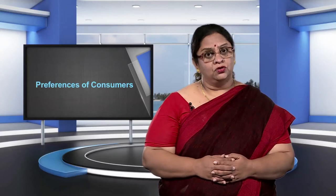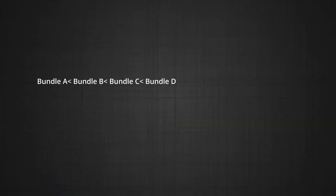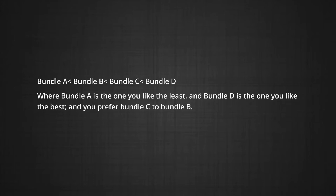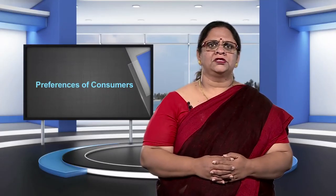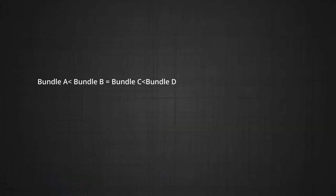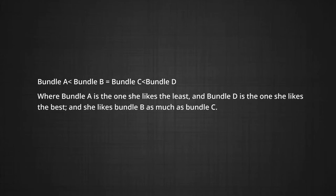On the other hand, you may draw up the following ranking in increasing order of preference: bundle A is the worst, bundle B is better, followed by bundle C, and then bundle D — meaning you also like bundle A the least and bundle D the best, but you prefer bundle C to bundle B. Similarly, your friend may draw up an alternative ranking in which she likes bundle A the least, she likes bundle B as much as she likes bundle C, and she likes both bundle B and C less than she likes bundle D.